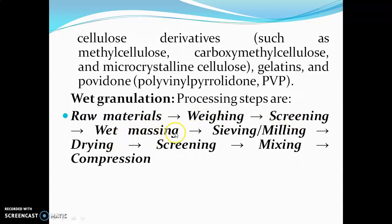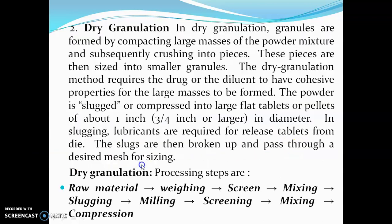The wet granulation processing steps are: raw materials → weighing → screening → wet massing → sieving or milling (size reduction) → drying → screening → mixing → compression.